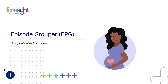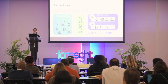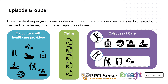Having looked at ways to group hospital admissions, we now focus on grouping different claims experiences. Insights, in collaboration with PPOSERV, have developed a grouper called the EPG, which groups encounters with healthcare providers into coherent and clearly definable episodes of care. The grouper utilizes a blend of clinical, actuarial and data science IP when defining and allocating episodes for claims.